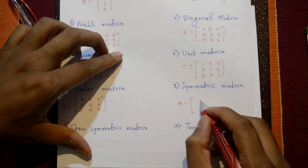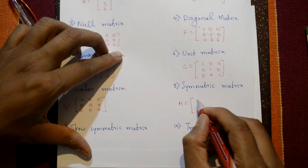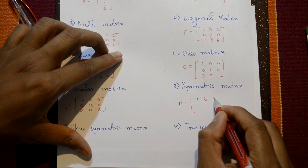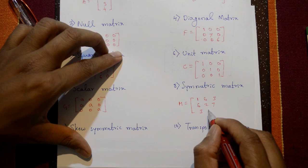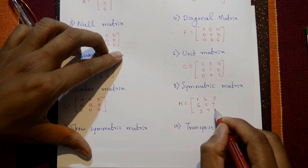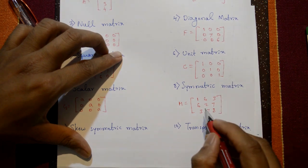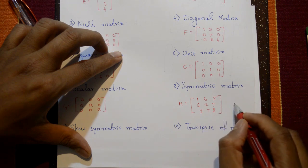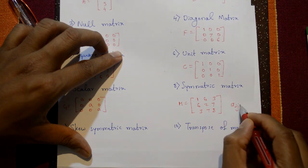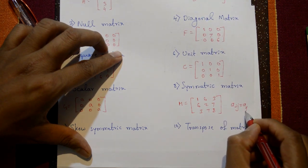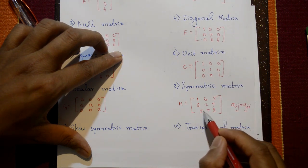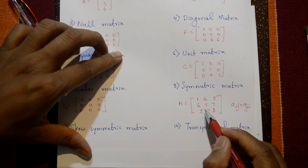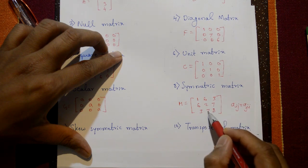The symmetric matrix is also a square matrix. For example: [1, 6, 3 / 6, 2, 7 / 3, 7, 8]. A symmetric matrix satisfies aij equal to aji, meaning corresponding off-diagonal elements are equal — for example, 6 and 6, 3 and 3, 7 and 7 — while diagonal elements can differ.